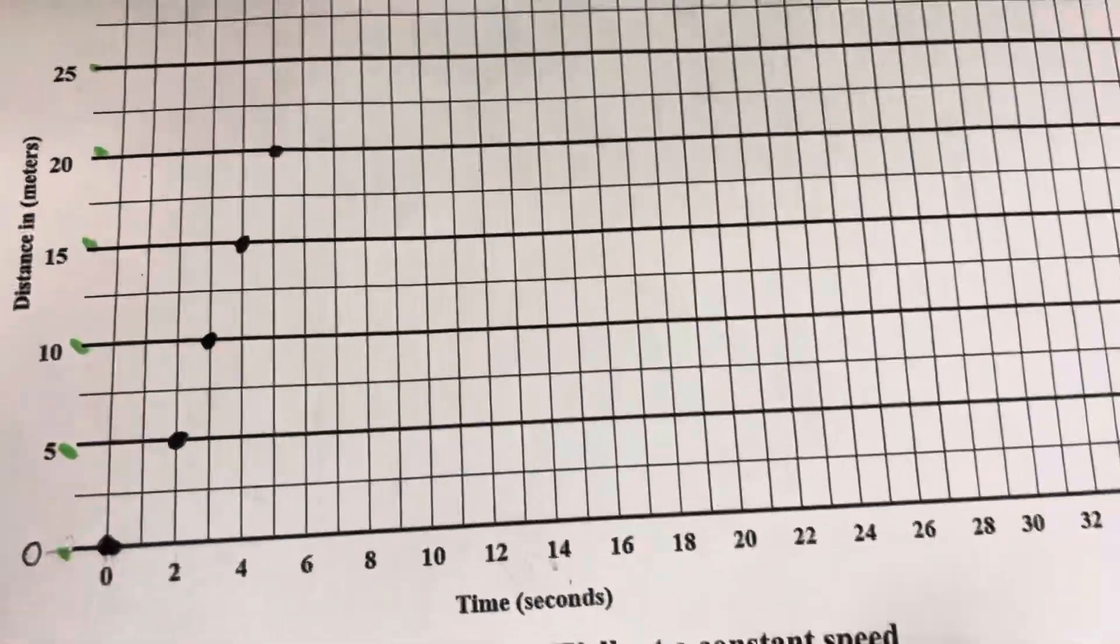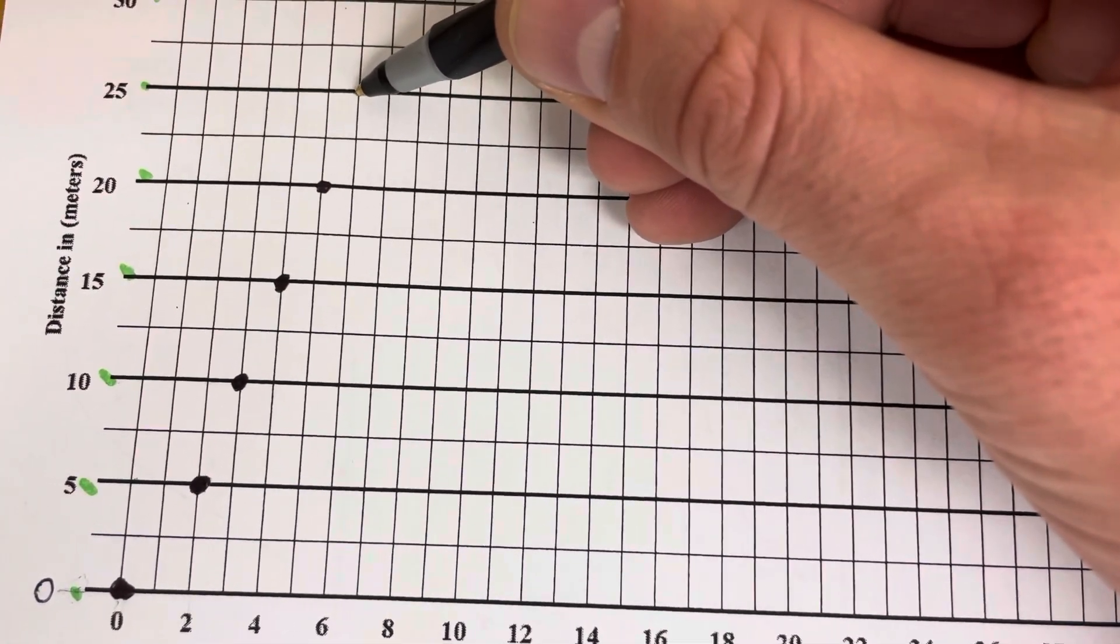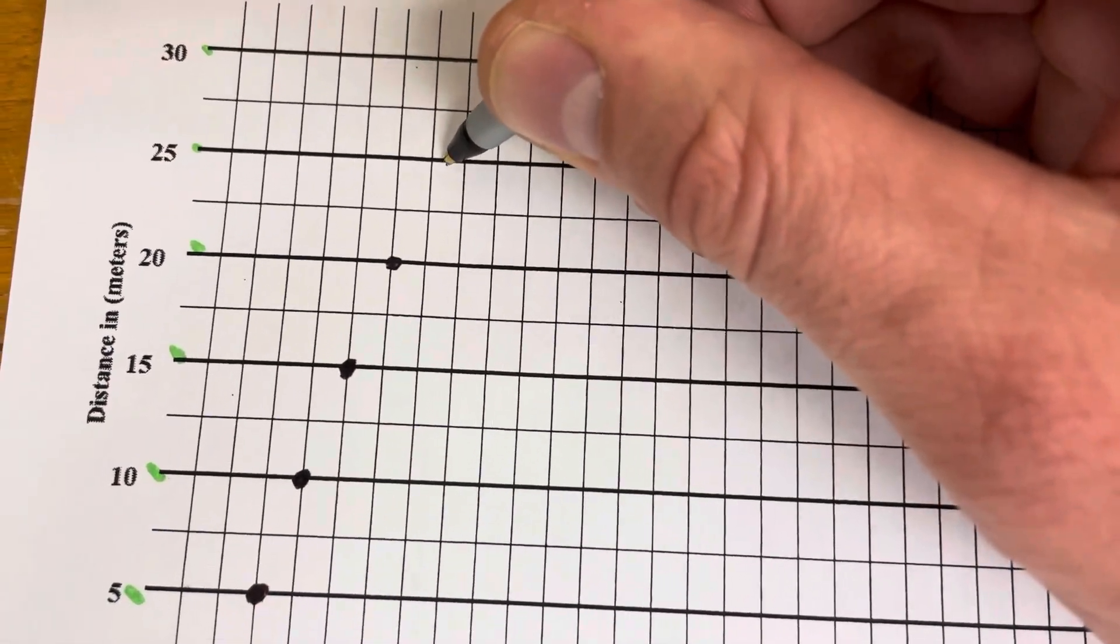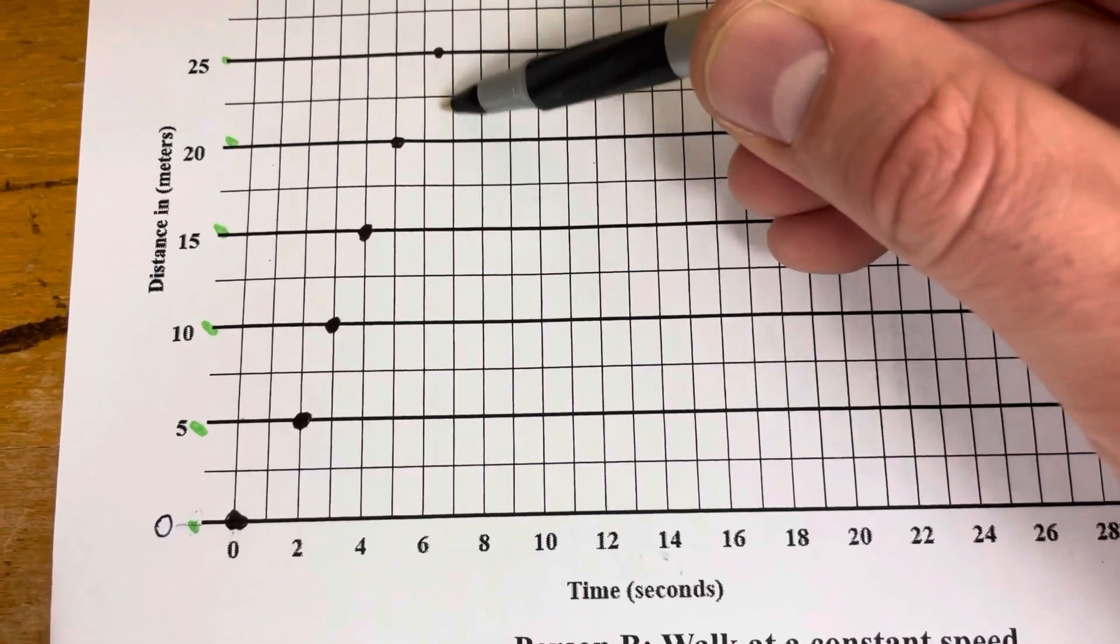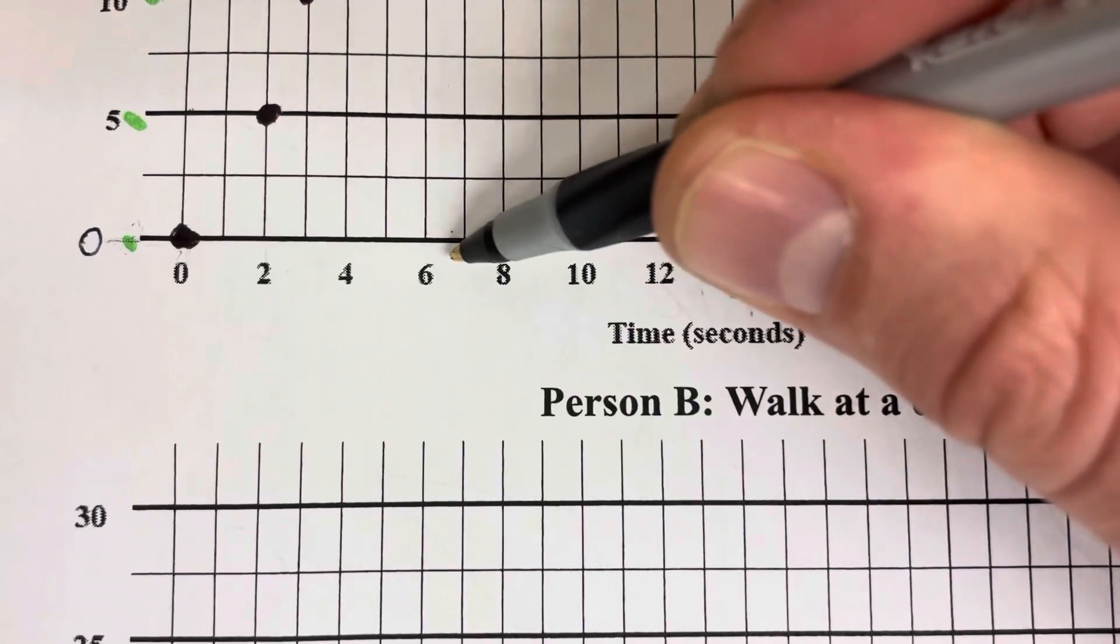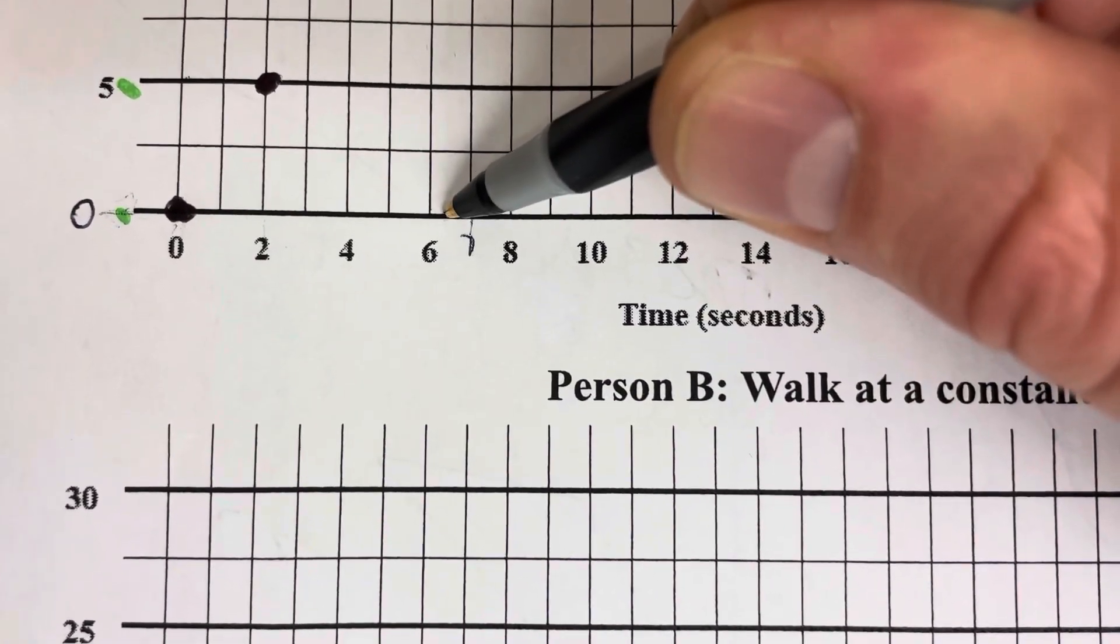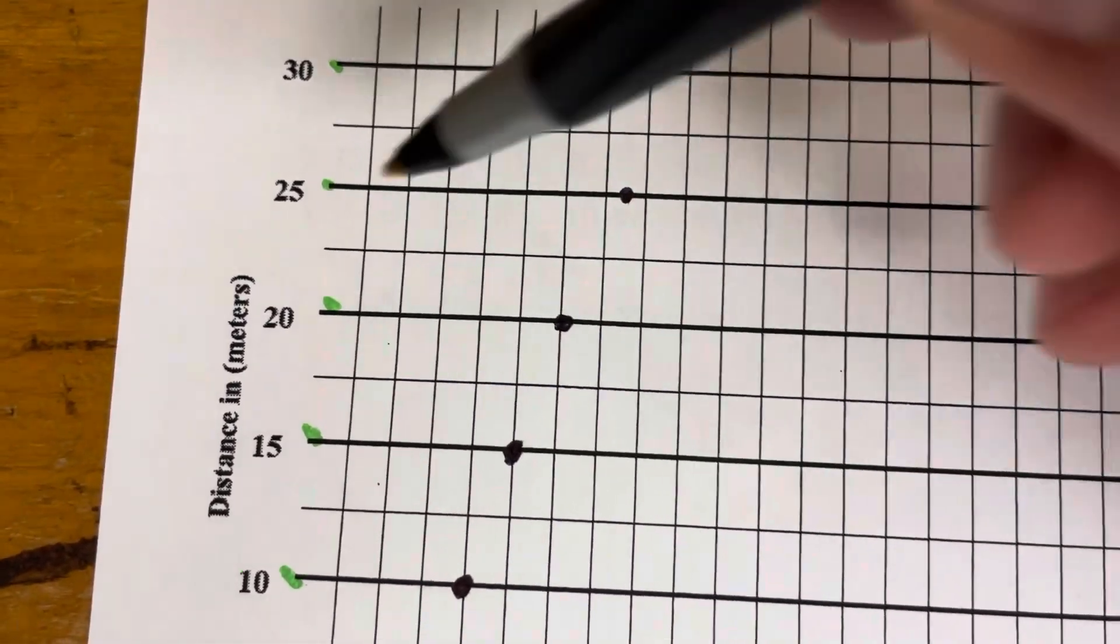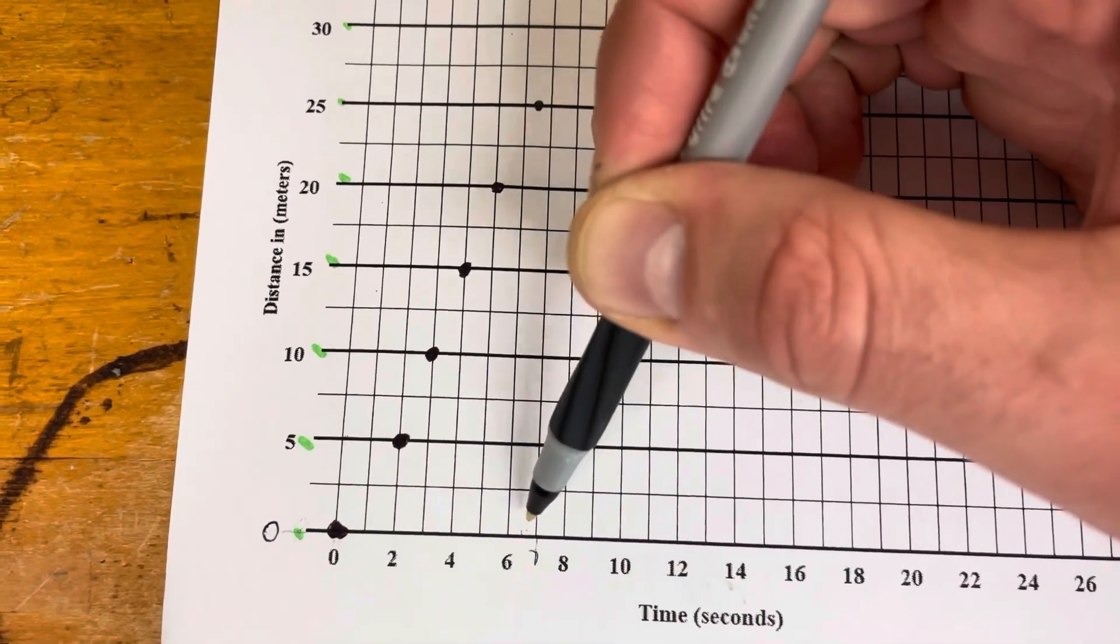Now at 25 we have 6 and a half. We're going to go up to 25 and go over to 6, then just a little over between 6 and 7, and that's 6 and a half. If you go all the way to the bottom you'll see that's right between 6 and 7. We're going to go up to 25 meters and label our point on that line.